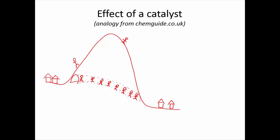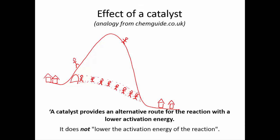You could say that the tunnel route has a lower activation energy than going over the mountain. But you haven't lowered the mountain. The tunnel has provided an alternative route, but it hasn't lowered the original one. The original mountain is still there and some people will still choose to climb it.